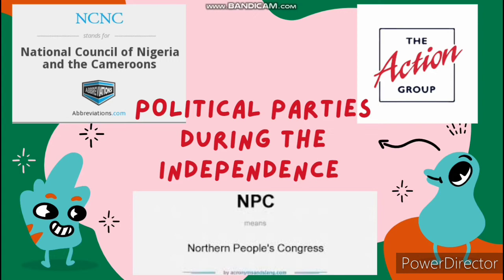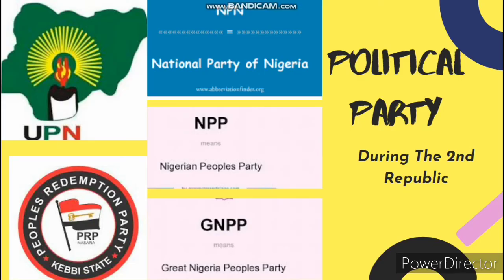During Nigeria's Second Republic from 1979 to 1983, many political associations were formed to contest elections. Five out of the numerous associations were registered as political parties: the National Party of Nigeria (NPN), Unity Party of Nigeria (UPN), Nigerian People's Party (NPP), People's Redemption Party (PRP), and Great Nigerian People's Party (GNPP).